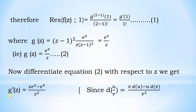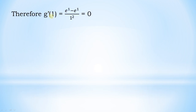We get g'(z). The right-hand side is of the form u/v, and we know the derivative of u/v equals (v·u' − u·v') / v². Therefore g'(z) = (z·e^z − e^z) / z². So g'(1) = (e¹ − e¹) / 1² = 0.